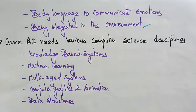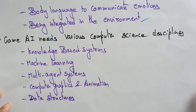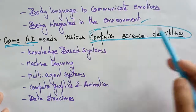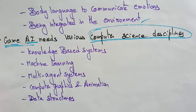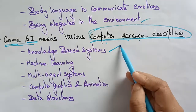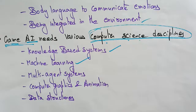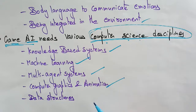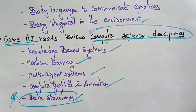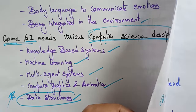Game AI acts just like an illusion of human behavior. It needs various computer science disciplines to work properly — obeying laws, decision making, planning, and pathfinding all feel natural with the help of these disciplines. A knowledge-based system should be known, machine learning should be understood, multi-agent systems, computer graphics and animation should be there, and data structures need to be used. These are the various computer science disciplines that game AI must be aware of.